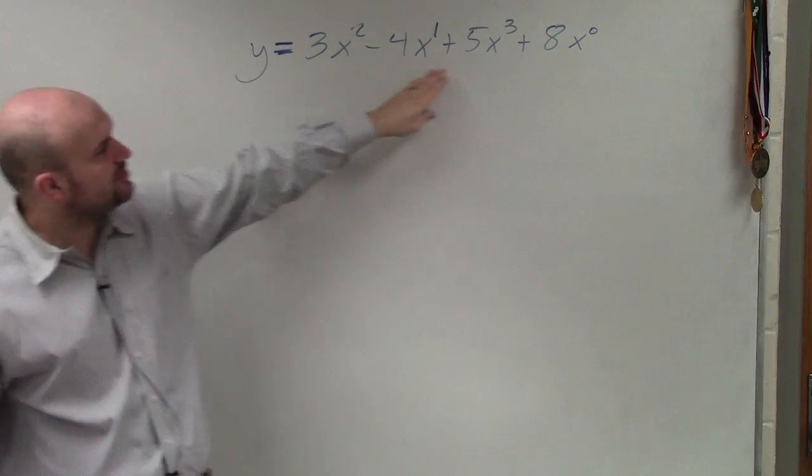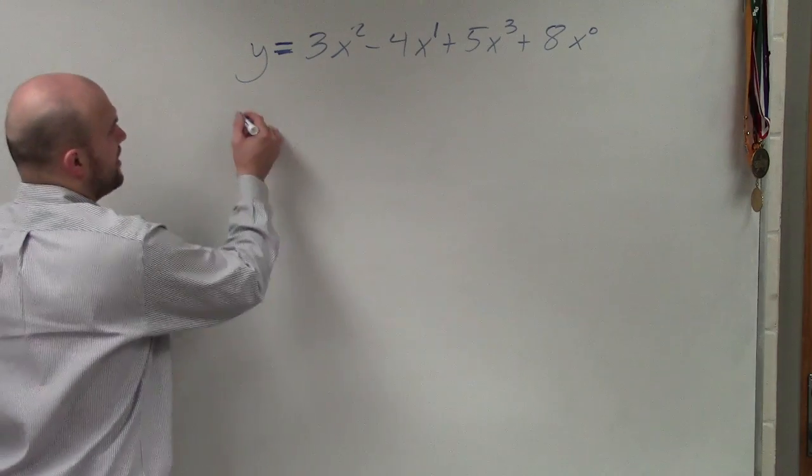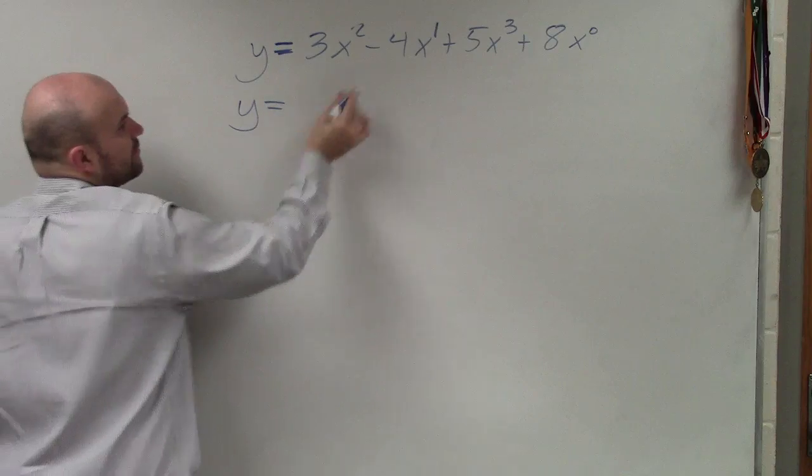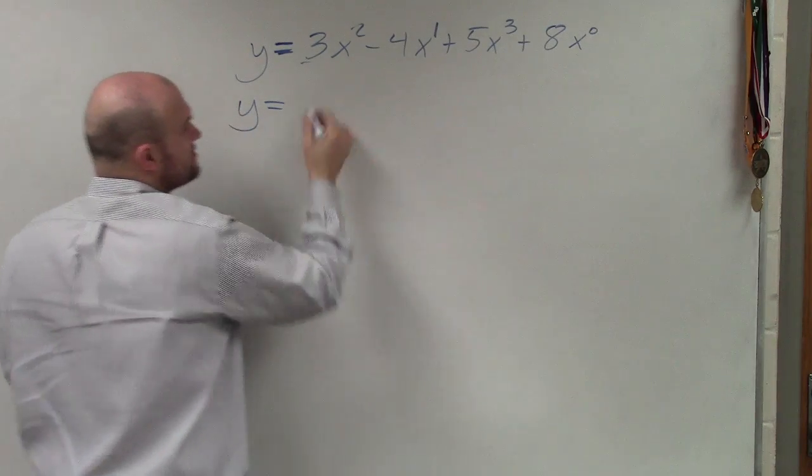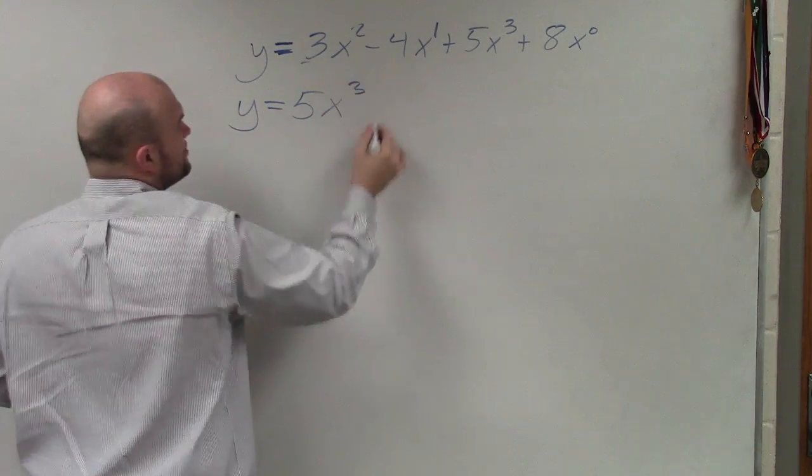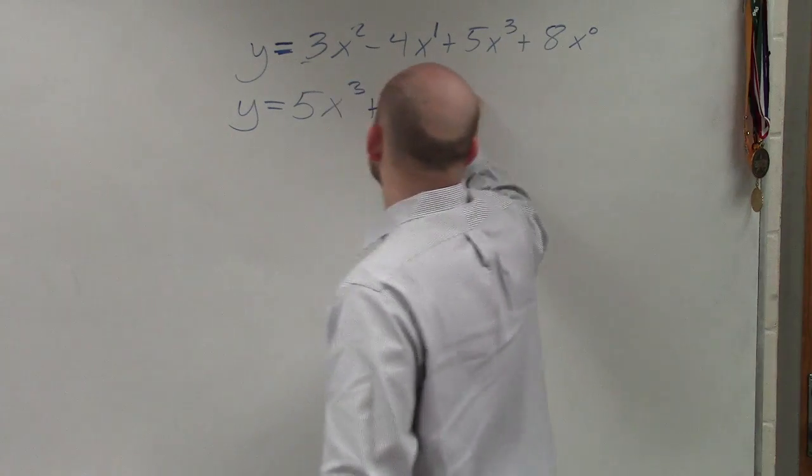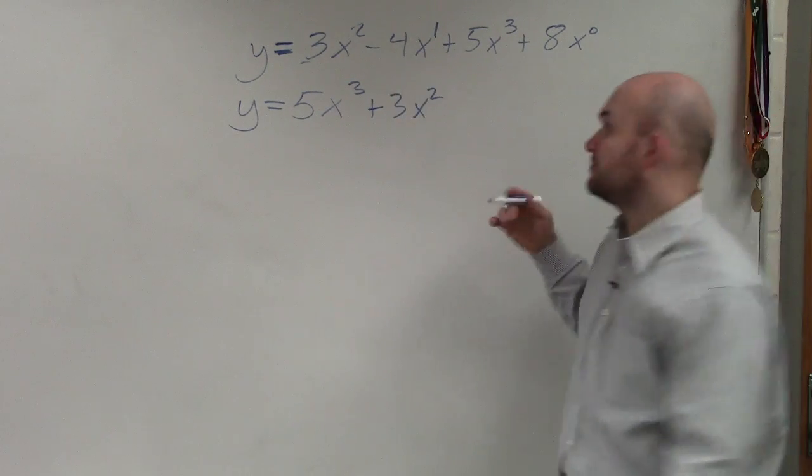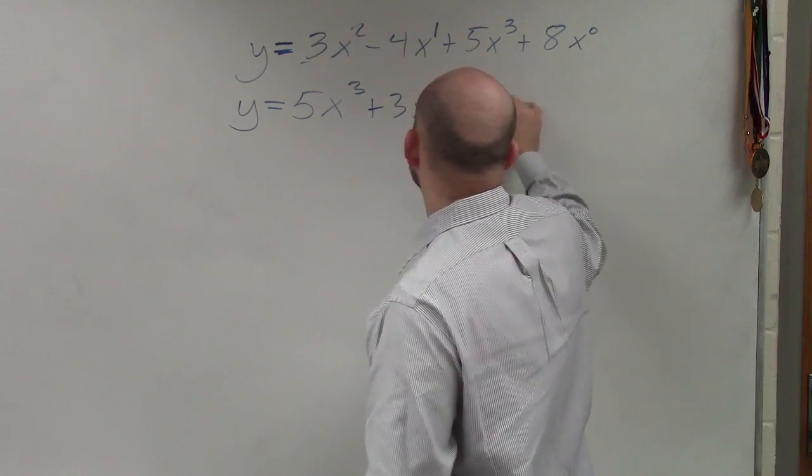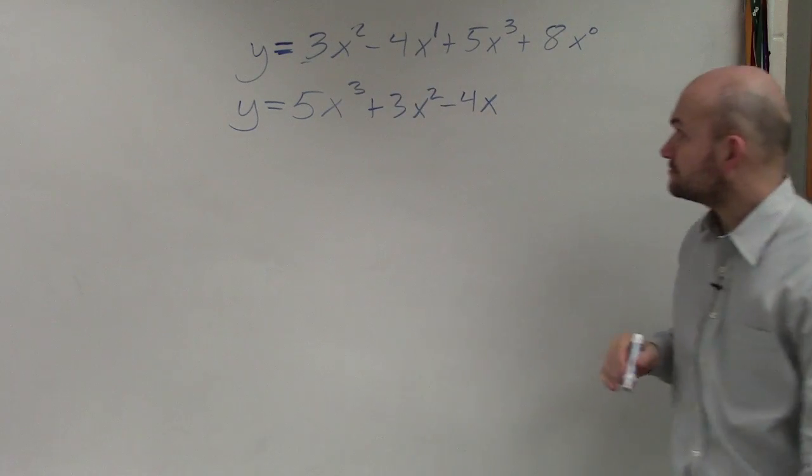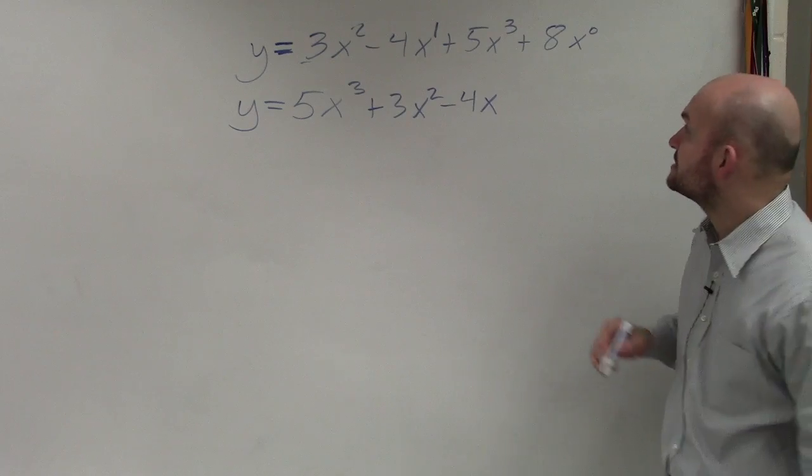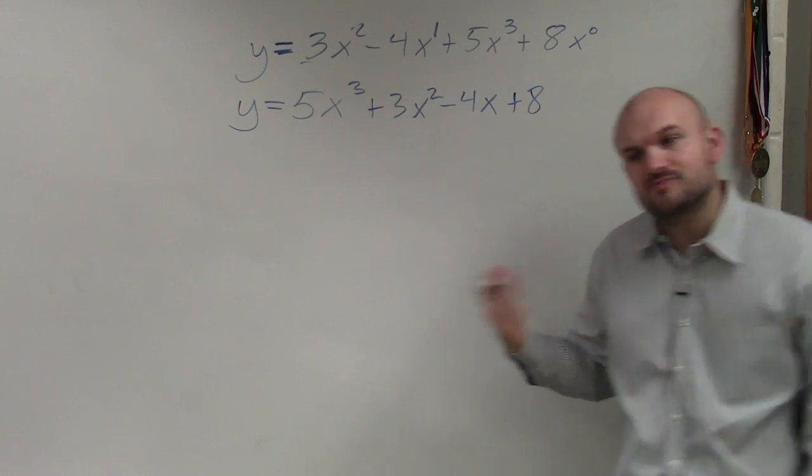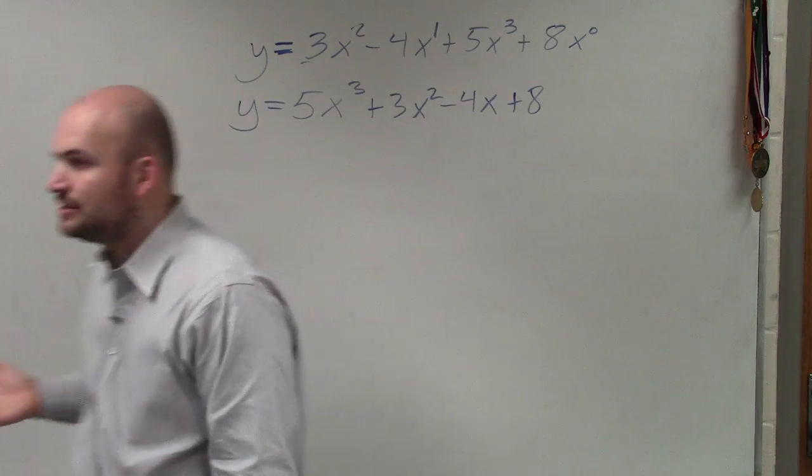Basically, all we're really going to do is just reorder these in order with the largest power first. So regardless of what the number is in front, we're going to say 5x cubed plus 3x squared. You do not have to write the 1 up there, but I just wanted to write it so you could see how it relayed. It has negative 4x and then plus 8. So therefore, now we just rewrite it in our descending order.